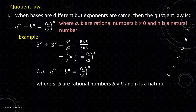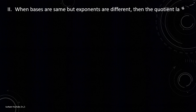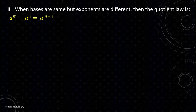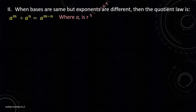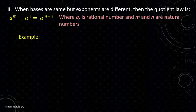The other condition of the quotient law says that when bases are the same but exponents are different. Suppose a is any base with exponent m, divided by the same base a with exponent n. Then in the answer the base will be the same and their exponents will be subtracted, where a is a rational number and m and n are natural numbers.